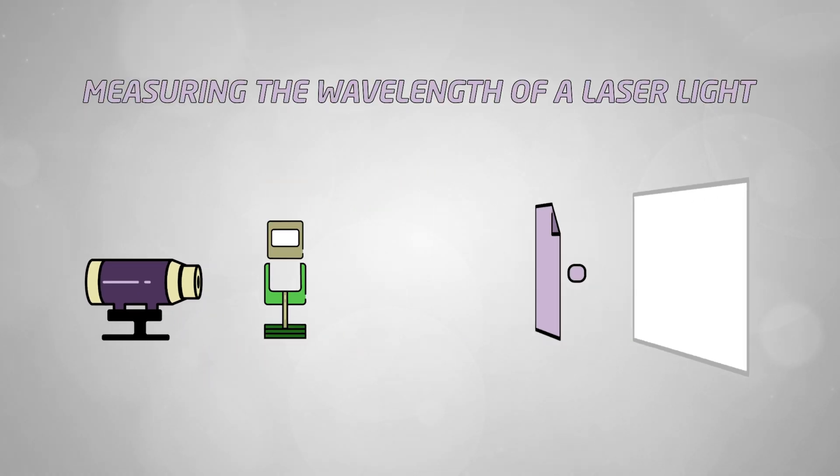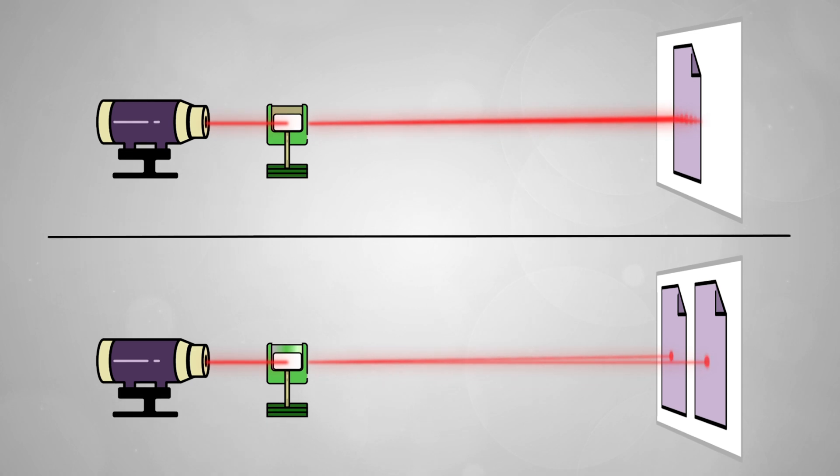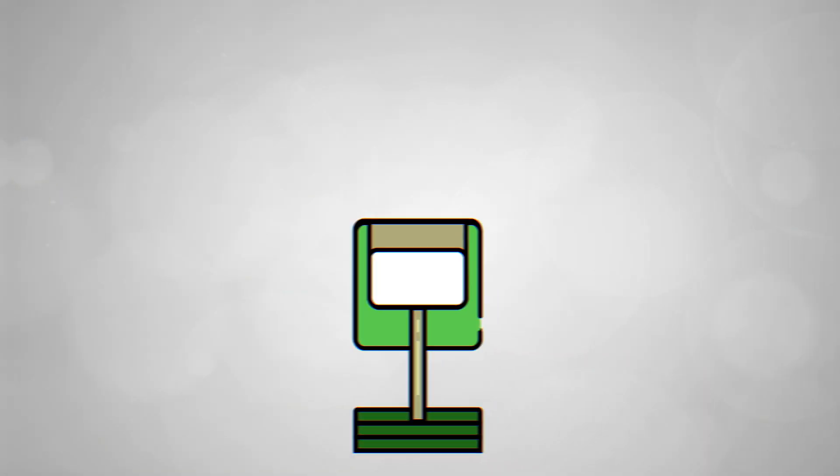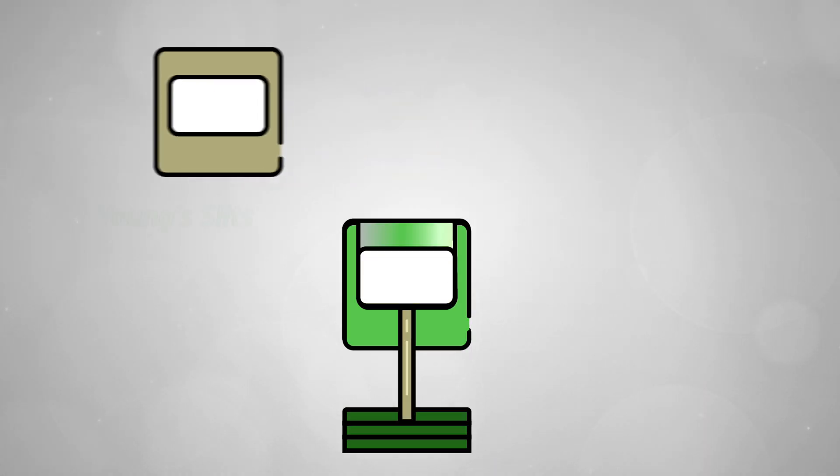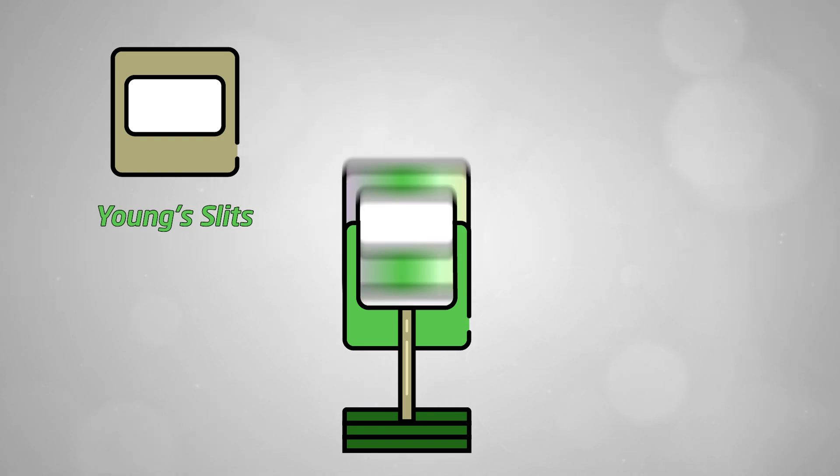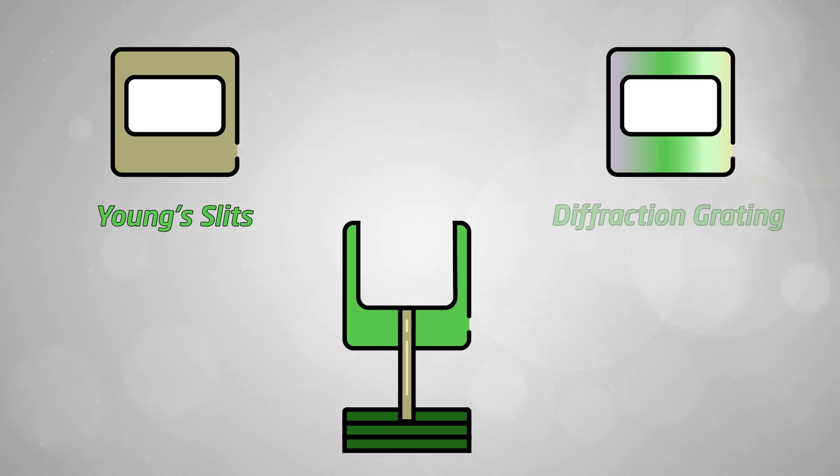To measure the wavelength of a laser light I'm going to show you two different techniques. The first experiment involves what's called Young's slits and the second experiment uses a diffraction grating.